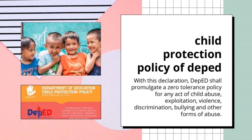DepEd also adopted a child protection policy to provide special protection for those who are gravely threatened or endangered by circumstances which may affect their normal development and over which they have no control, as well as to assist concerned agencies in rehabilitation.